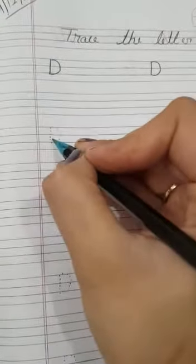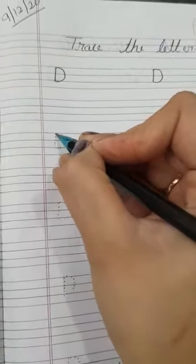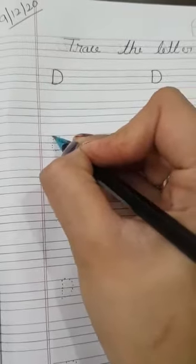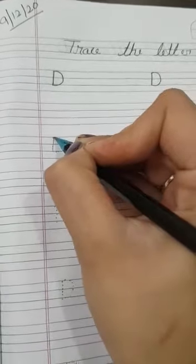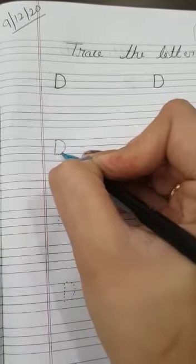Now kids, let's start the work. First we will join all the dots. We will join these dots like a standing line, like this. And then we will join all these dots like a curve.